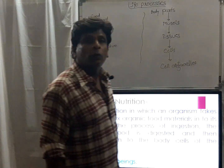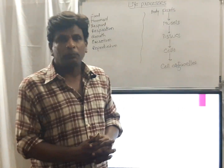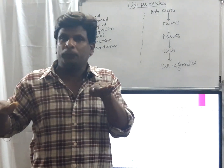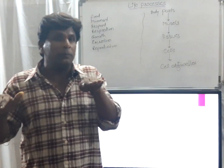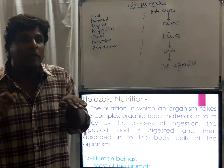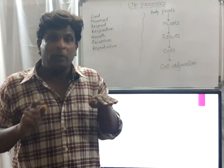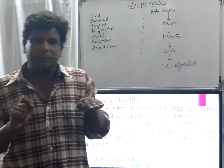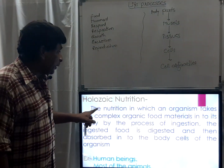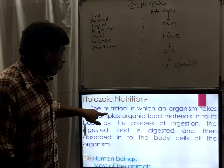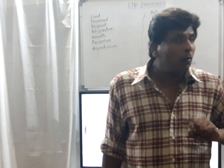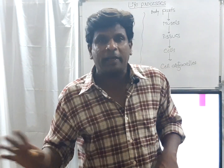Next, we come to the third type of nutrition: holozoic nutrition. In heterotrophic nutrition, we studied three types — the first depends on dead animals and dead plants, the second depends on living organisms. Now let us know what type the third organisms are. The definition: the nutrition in which an organism takes complex organic food materials into its body.